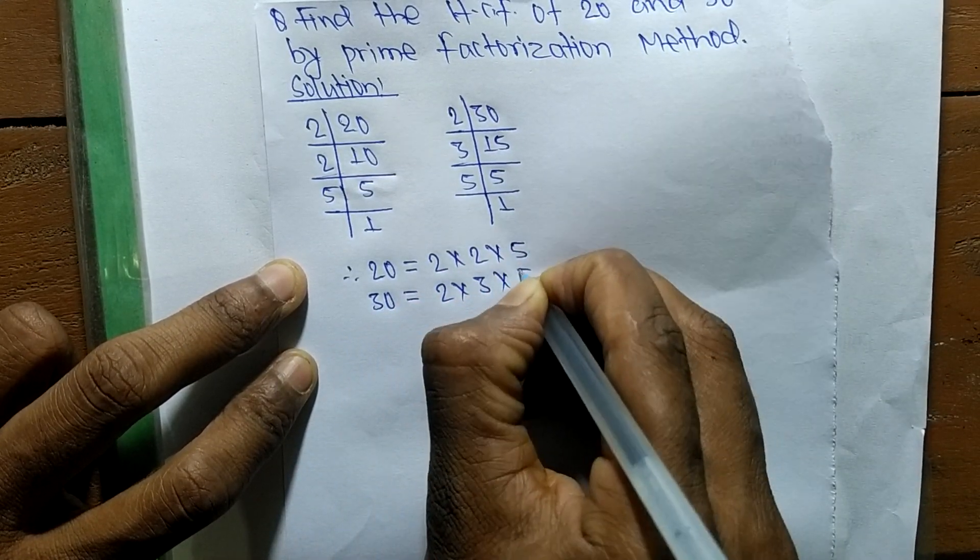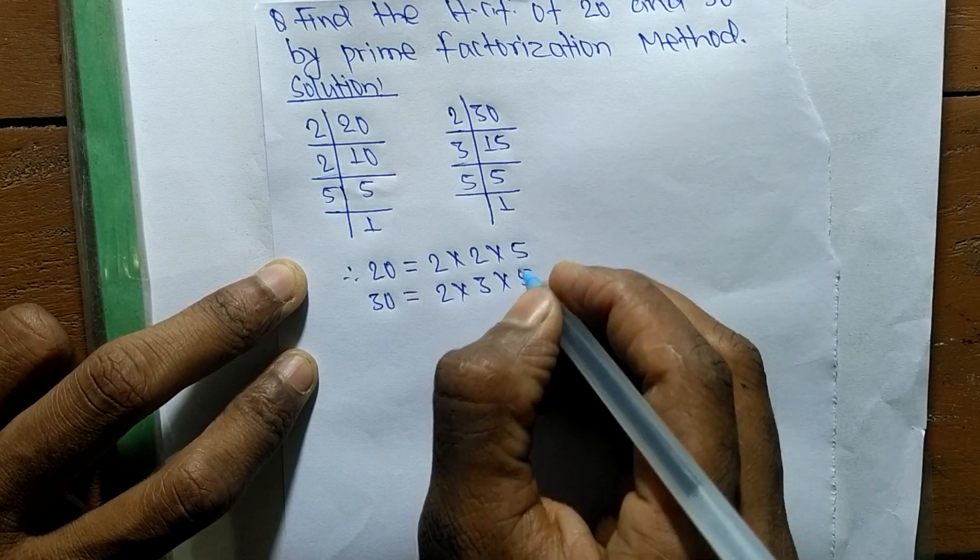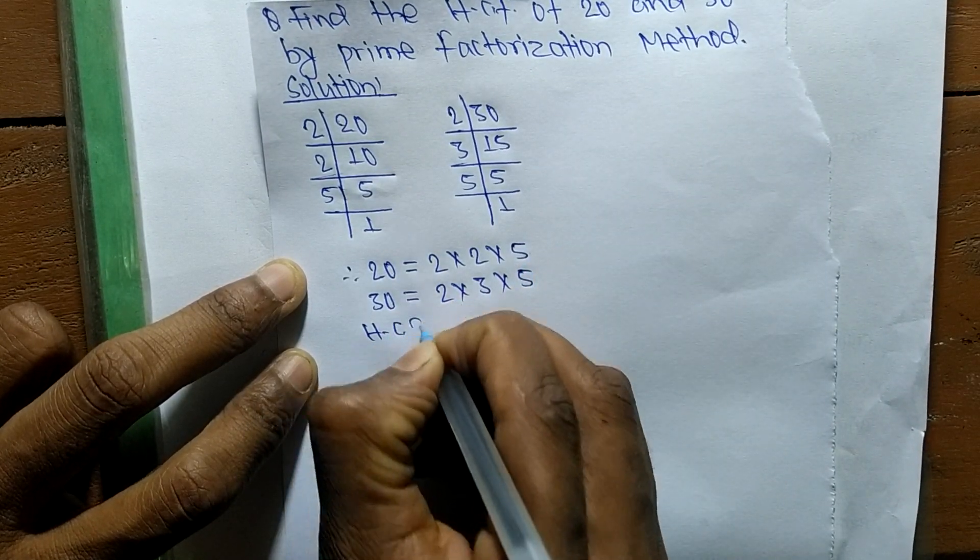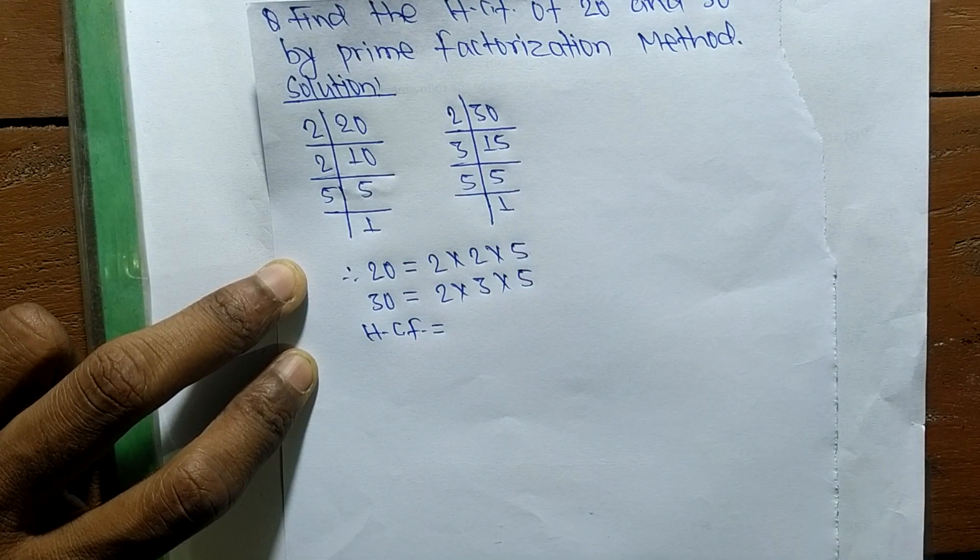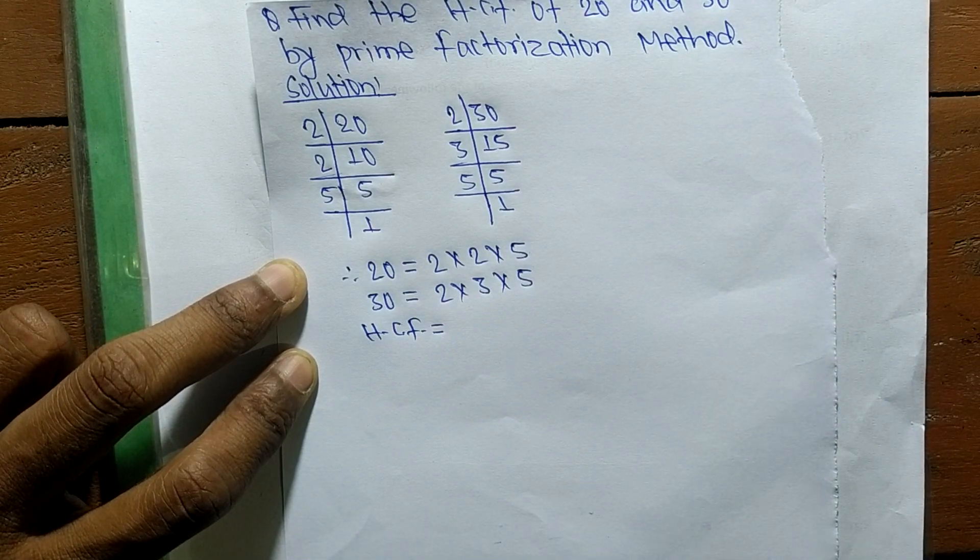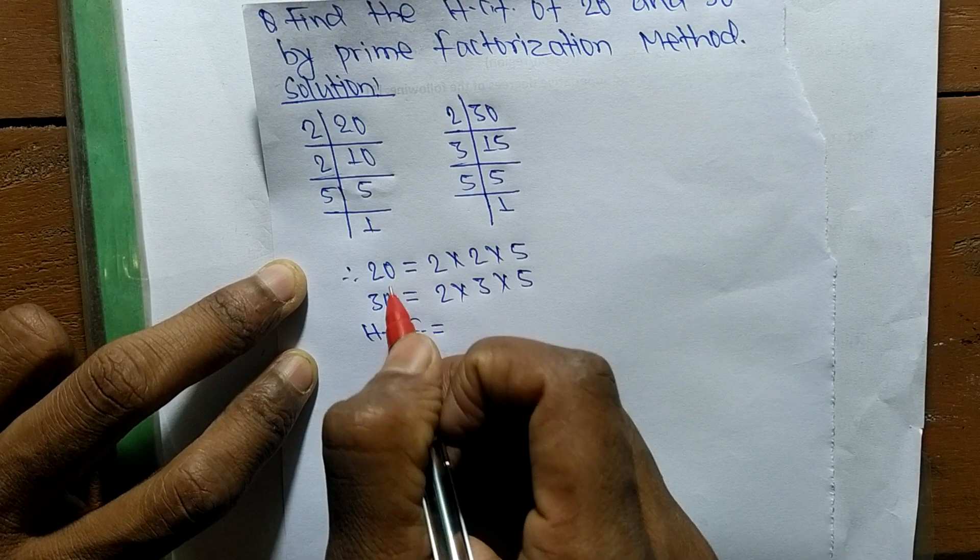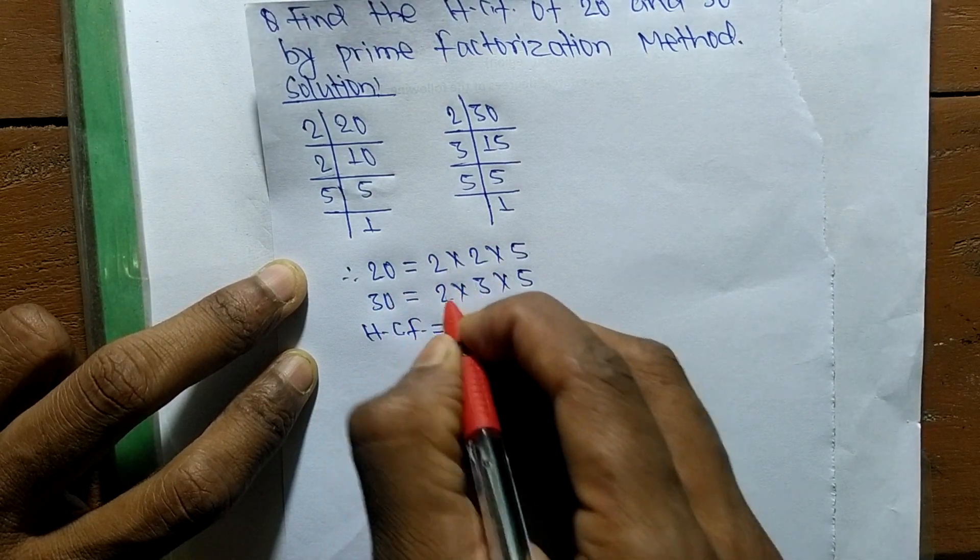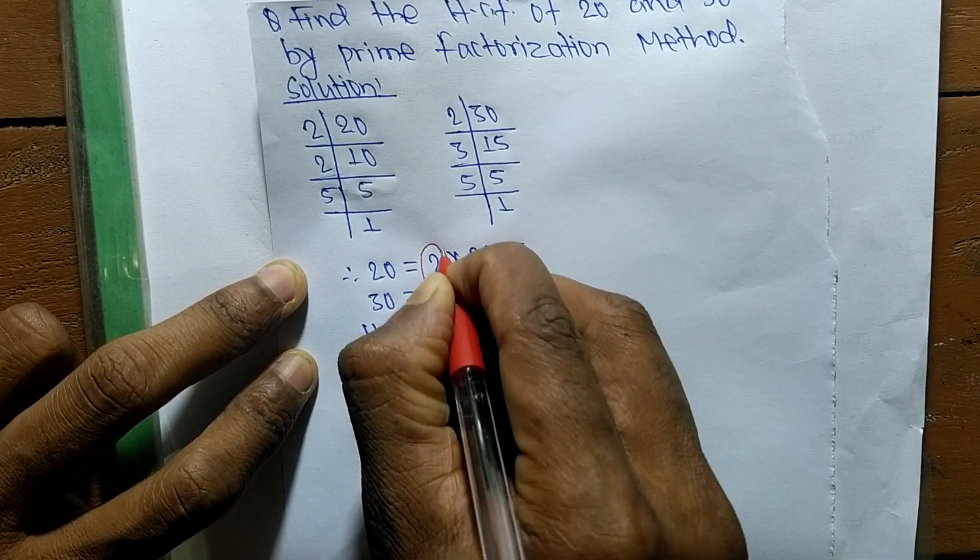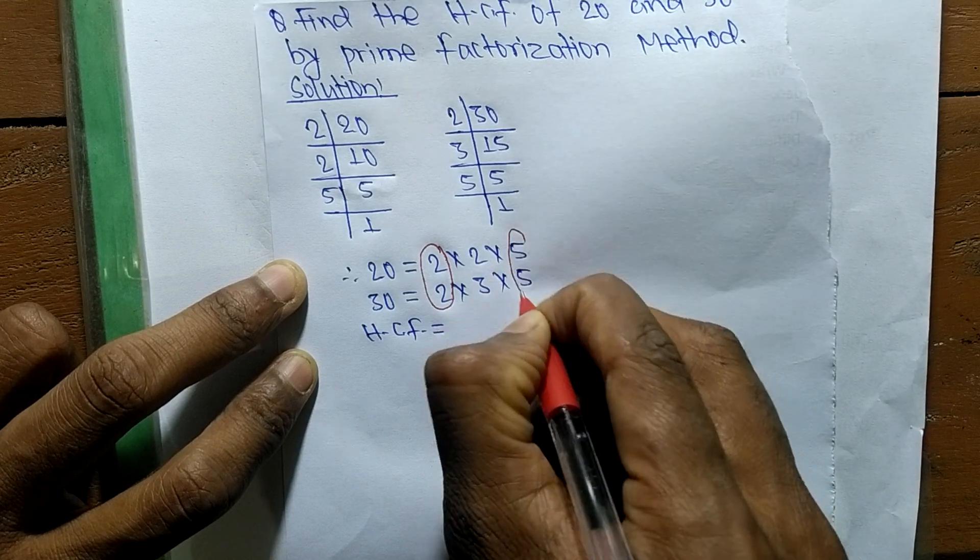So its HCF is equal to... now we have to find out the common factors in the prime factors of 20 and 30. So the first common factor here is 2 and second one is 5.